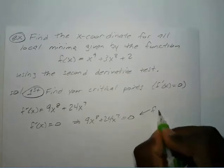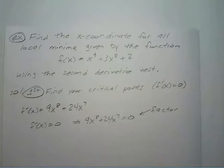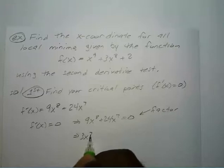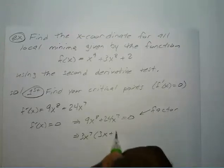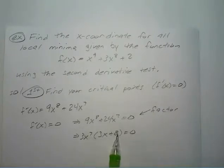We can actually factor this out. We can factor 3x to the 7th power, giving us 3x to the 7th power times 3x plus 8 equals zero. If you distribute, you get 9x to the 8th plus 24x to the 7th.